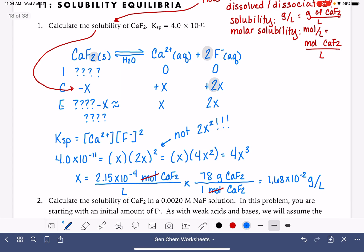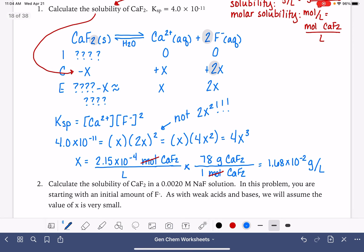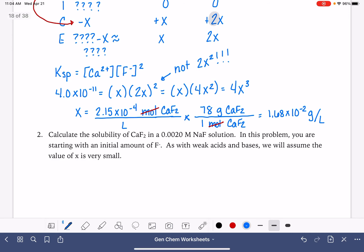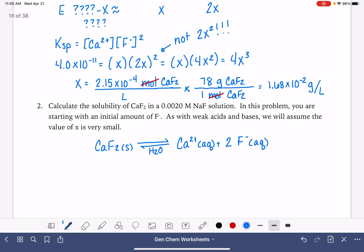The next problem that we're going to solve is pretty similar. This is just one where we're dealing with solubility in the presence of a common ion. So we're looking at still the solubility of calcium fluoride, which means that our reaction is going to be very similar, CaF2 solid, dissociating in water to produce Ca2+ aqueous and 2F- aqueous. So the same balanced equation that I used for the first problem.